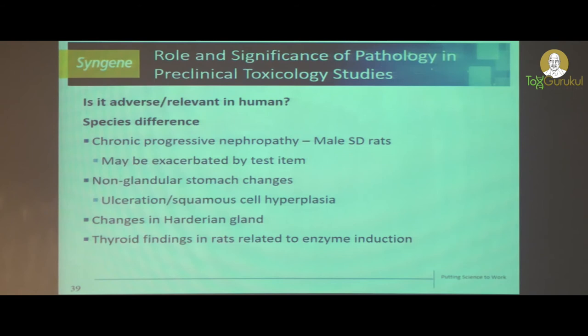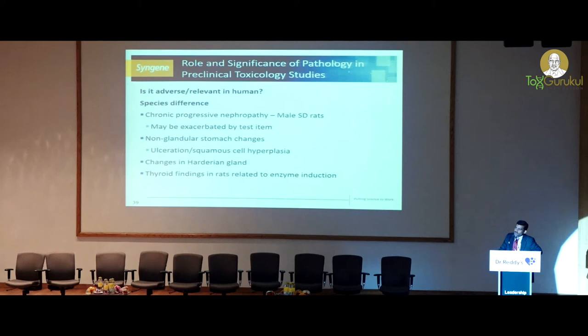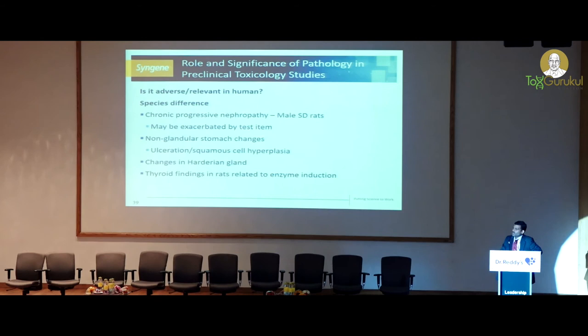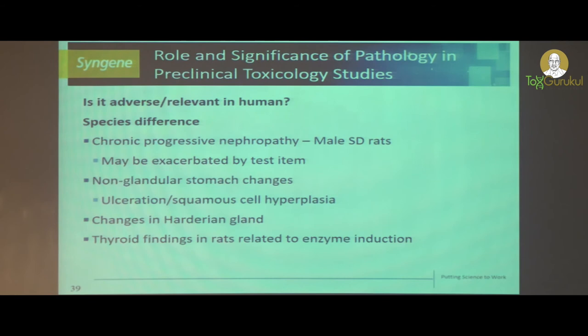Similarly, non-glandular stomach findings — for example with statins like atorvastatin — often cause changes in the non-glandular stomach such as squamous cell hyperplasia and hyperkeratosis in rodents. But this finding is not relevant to human beings because humans do not have a non-glandular stomach counterpart. There is only the glandular stomach. Also, changes in the Harderian gland are not relevant to humans because humans do not have a Harderian gland.